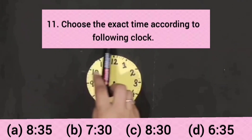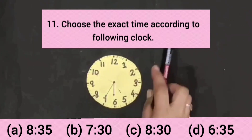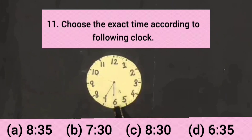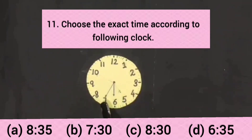The next question is: choose the exact time according to the following clock. In this, 4 options are given and we have to choose the correct option. Students, on the clock, the hour hand is on 6 and the minute hand is on 7.